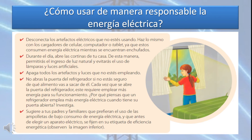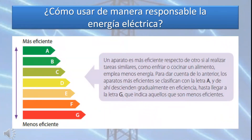Es por eso que debemos contribuir al cuidado del medio ambiente a través de las siguientes medidas: desconectar los artefactos eléctricos que no estés usando; durante el día, abrir las cortinas de tu casa para aprovechar la luz natural; apagar todos los artefactos y luces que no estés empleando; no abrir la puerta del refrigerador si no estás seguro de qué alimento vas a sacar. Finalmente, se recomienda el uso de ampolletas de bajo consumo y elegir aparatos fijándose en su etiqueta de eficiencia energética. Los aparatos más eficientes se clasifican con la letra A y descienden gradualmente hasta la letra G, que indica los menos eficientes.